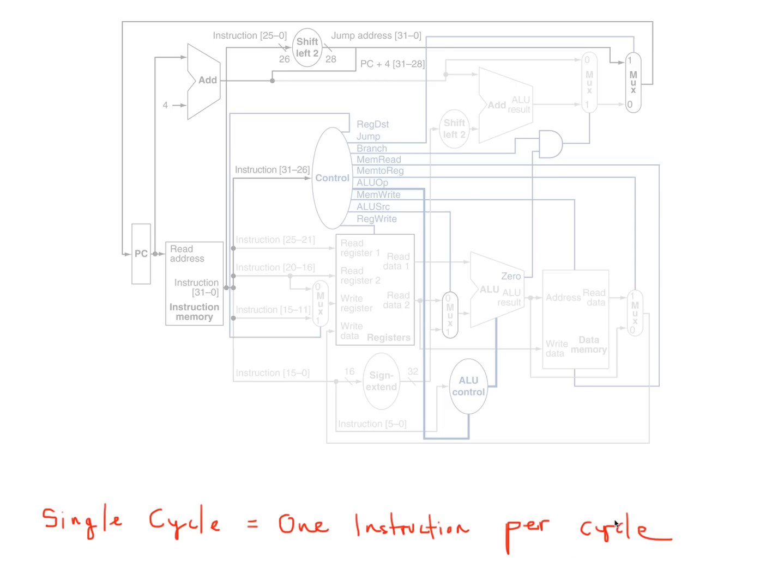So what does single cycle mean? Single cycle means that there's only one instruction per cycle. In other words, in our processor that we have here, there's only one instruction being executed at one time. As we've seen from some of the pipeline stuff that we've done in class, there's multiple instructions going on in these different stages. So in the single cycle datapath here, we only have one.